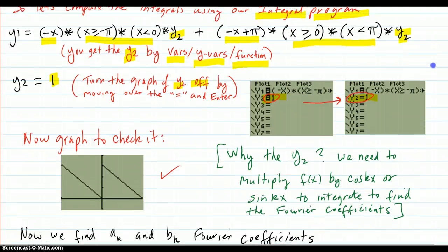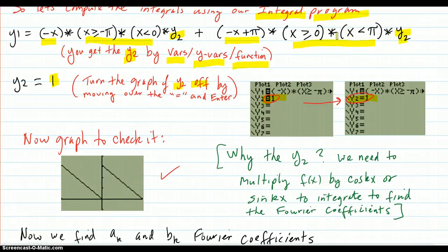Now we're going to check our formula here, our y1. So graph to check it. We graph this, and sure enough, it checks out. That's the sawtooth wave.